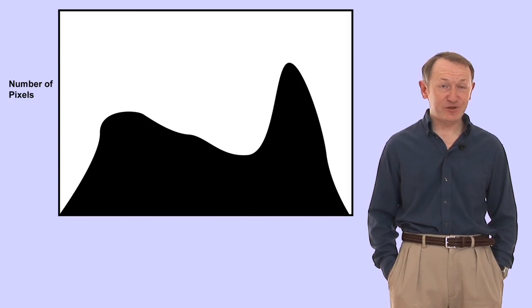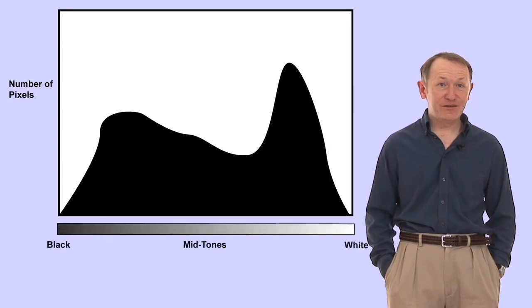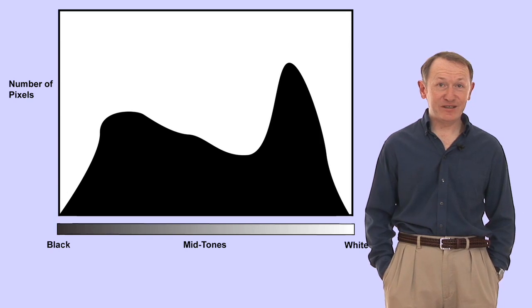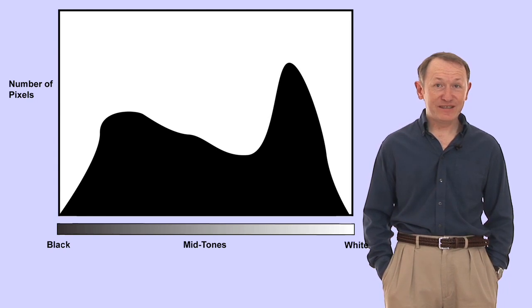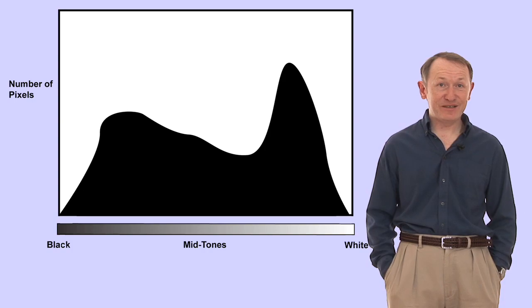Let's now have a look at histograms. Histograms are one of the great tools of digital photography that we didn't have with film. A histogram is essentially a graph of the exposure, and from the histogram we can determine if the exposure is good or bad. On the left hand side of the histogram we have black, on the right hand side is white, and between the left and right sides we have different tones — dark tones on the left becoming increasingly brighter until we have the bright tones in white on the right. The height of the histogram simply shows that we have a lot or not very many pixels of a certain value.